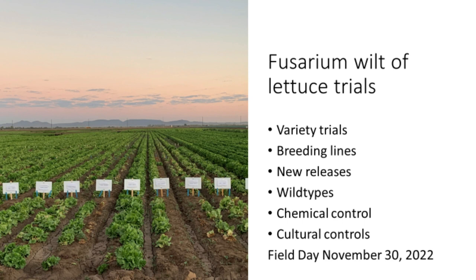Fusarium wilt of lettuce trials have been ongoing since 2019, evaluating varieties, breeding lines from public programs, wild types for new resistance sources, chemical controls, and cultural controls like biosolarization. A field day is scheduled for November 30th of this year at the JV field in the South Yuma Valley — the same location as previous years. Emails will be sent out with details.